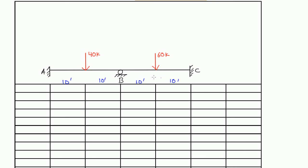Here we have a beam supported by a roller at B, and then we have two fixed ends, A and C. There's a point load of 40 kips acting in the middle of span AB, at a distance of 10 feet from A. And here we have a 60 kip load acting in the middle of span BC.